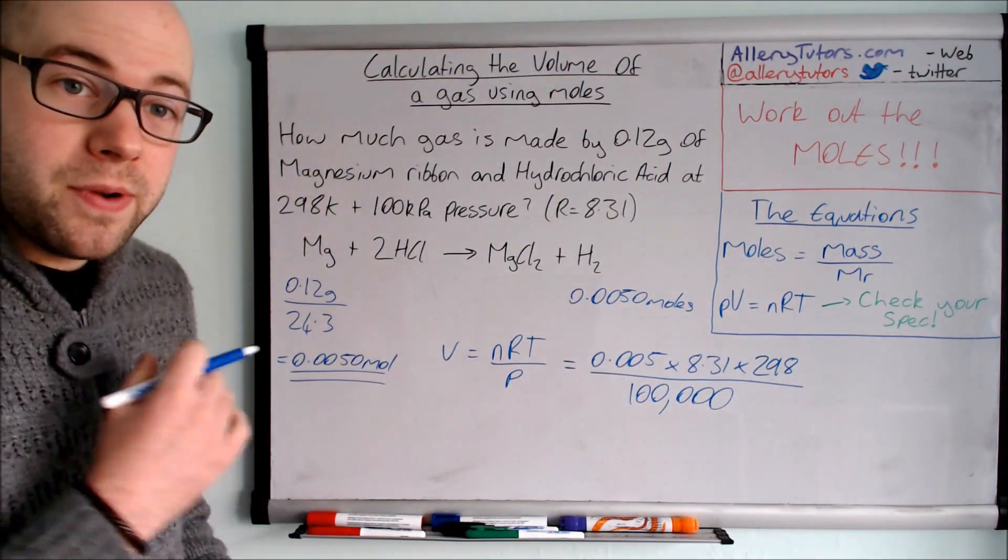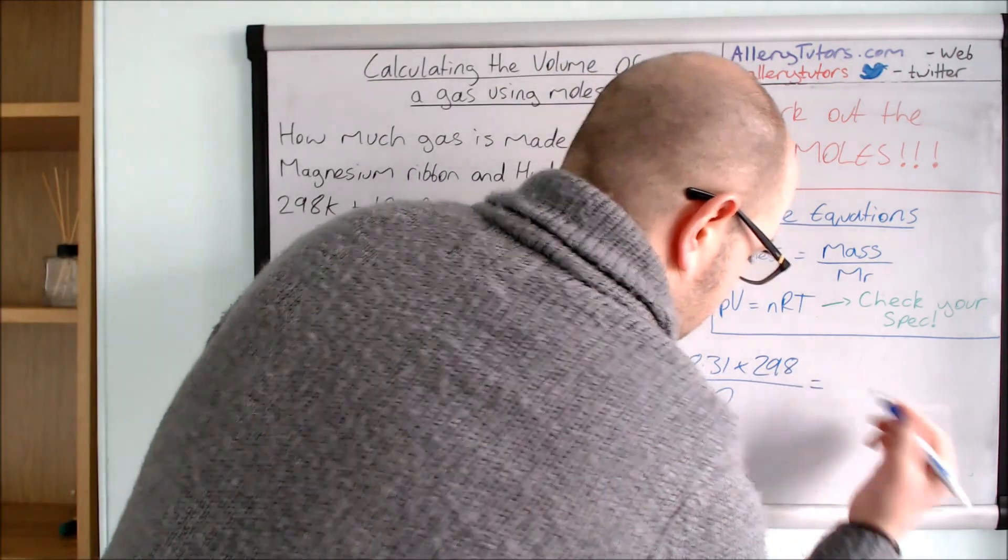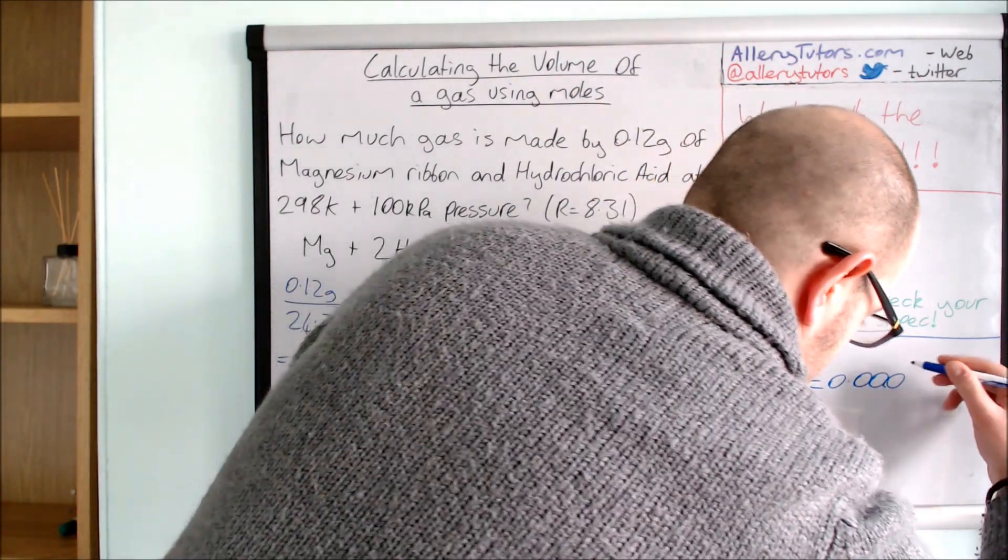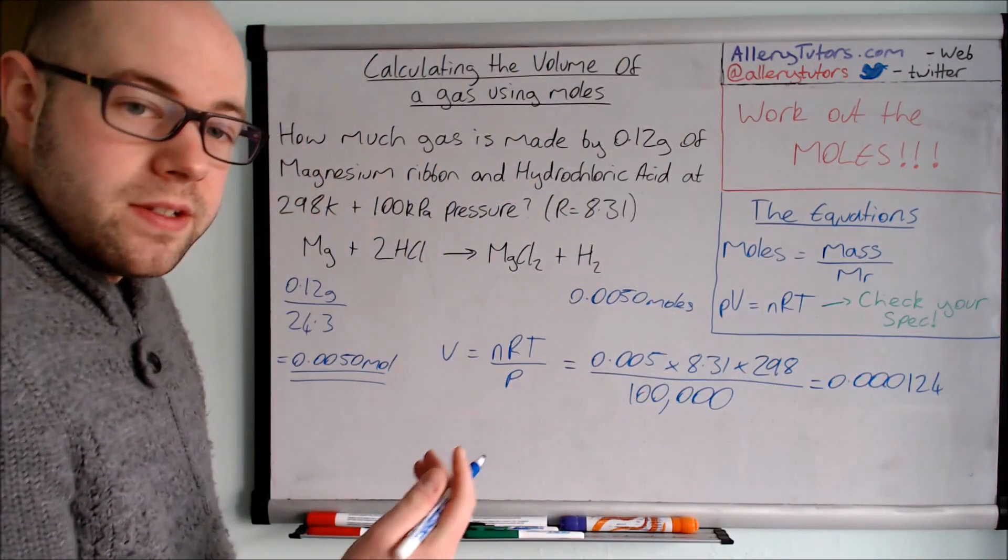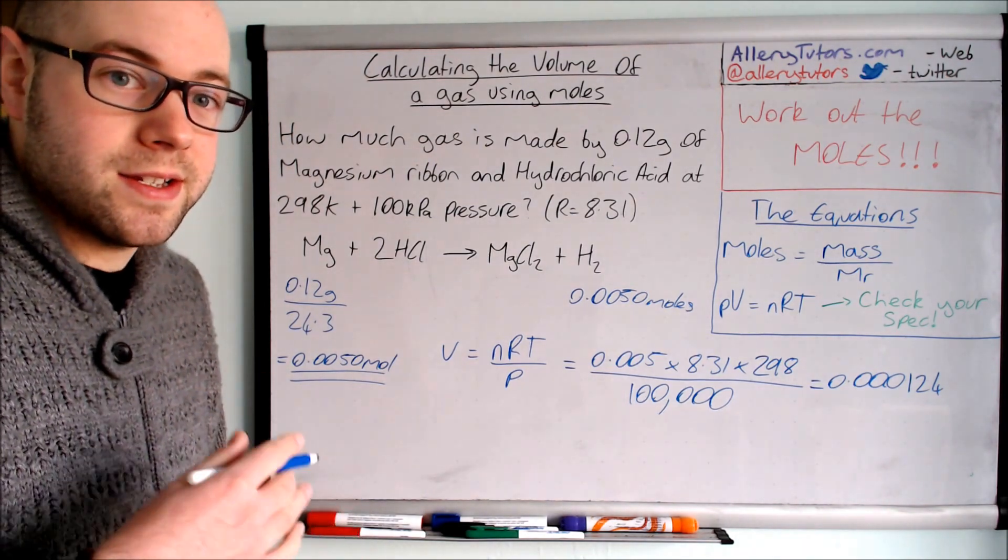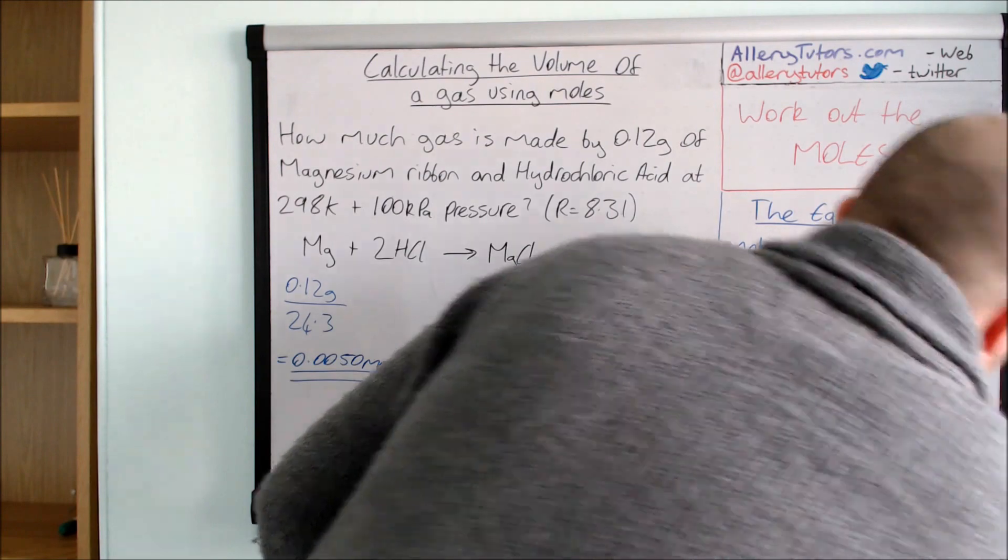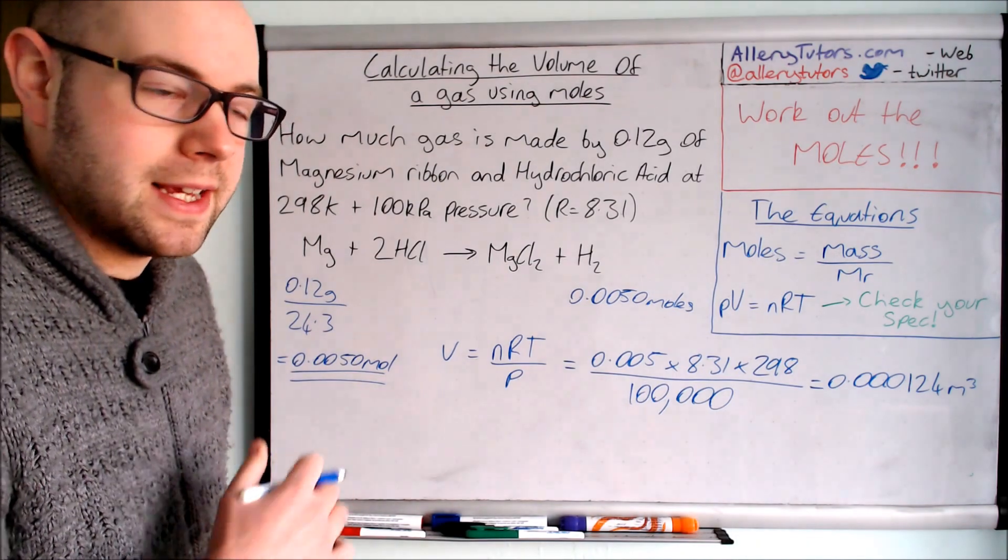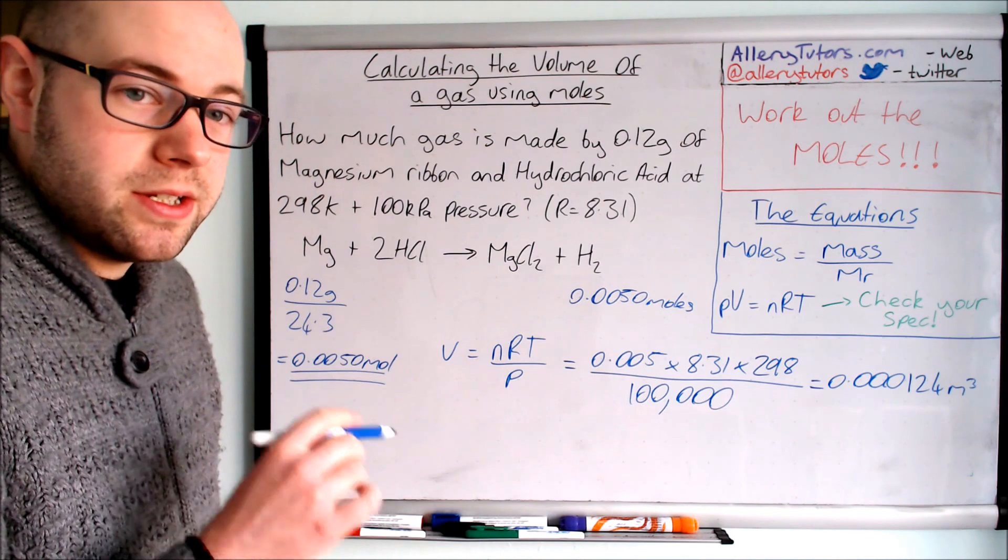So if we put this into our calculator we should get a volume. So the volume we should get is 0.00124. And the units of this is metres cubed. Volume in the ideal gas equation as standard is metres cubed. So you've got to really watch out for that as well. So there's little tiny pitfalls. Although the calculation is pretty straightforward, the units are the really kind of big thing here that you've got to make sure you get right. Now that is obviously the units in metres cubed.